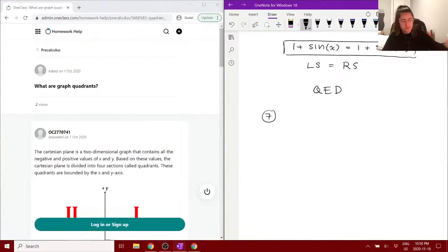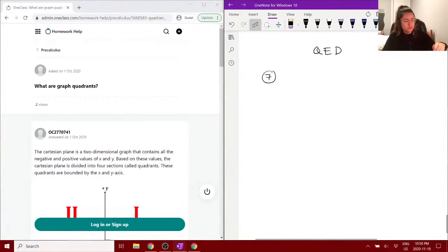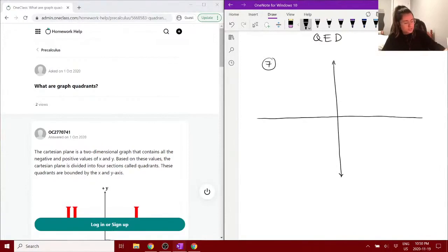We have just one more, so our question number 7 asks us, what are graph quadrants? So, let's draw out a graph. If we're given,